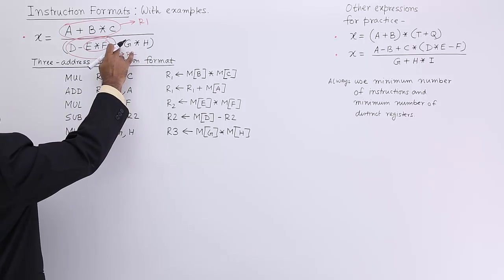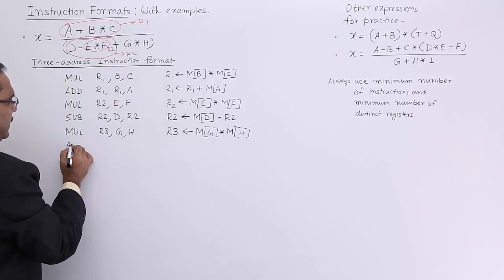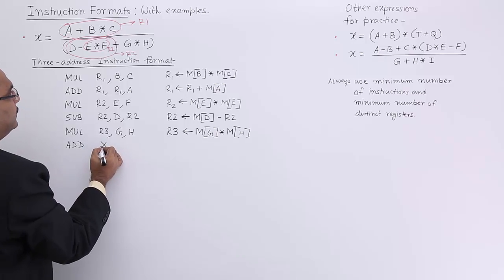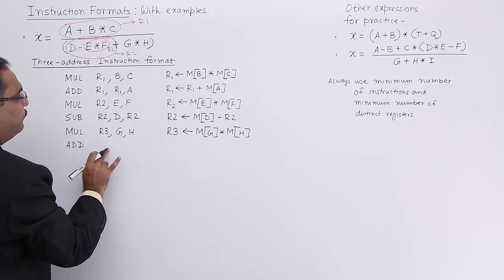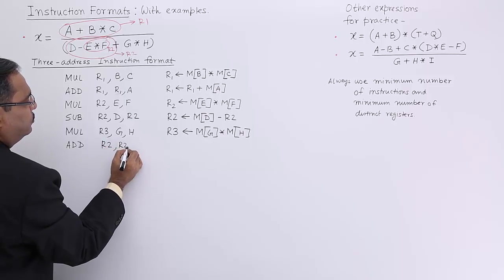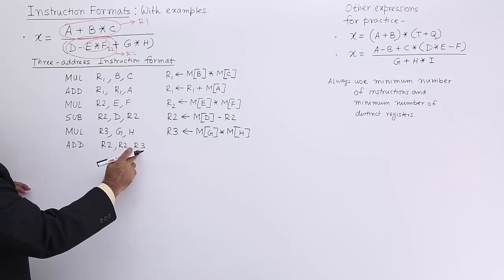Now R3 is this one, R2 is this one and here we are having this plus. I shall go for add. I shall go for add and the result, add R2, R2, R3.